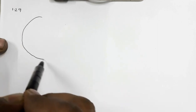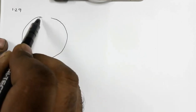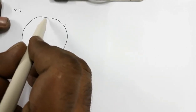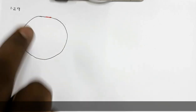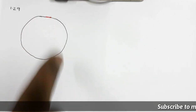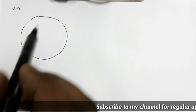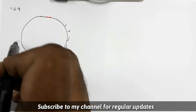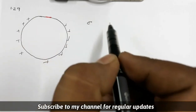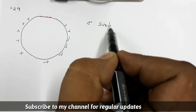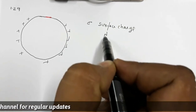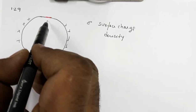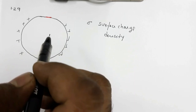Suppose this is a hollow conductor — initially complete without any hole. The red part is where we are going to make the hole. Since it is a hollow conductor, charges reside on the surface, and σ is the surface charge density. In the interior region, we know that for a hollow conductor the electric field intensity is zero.